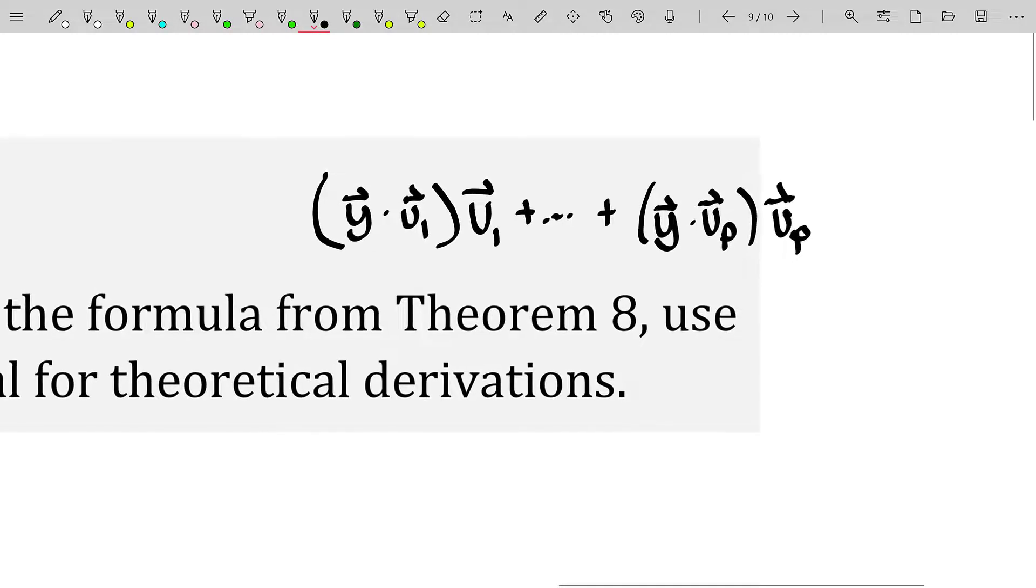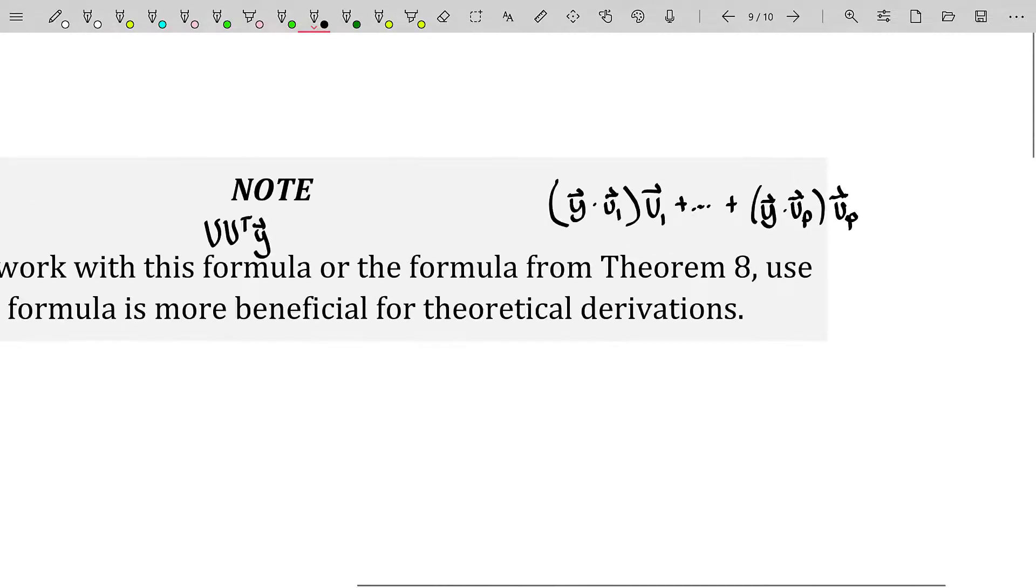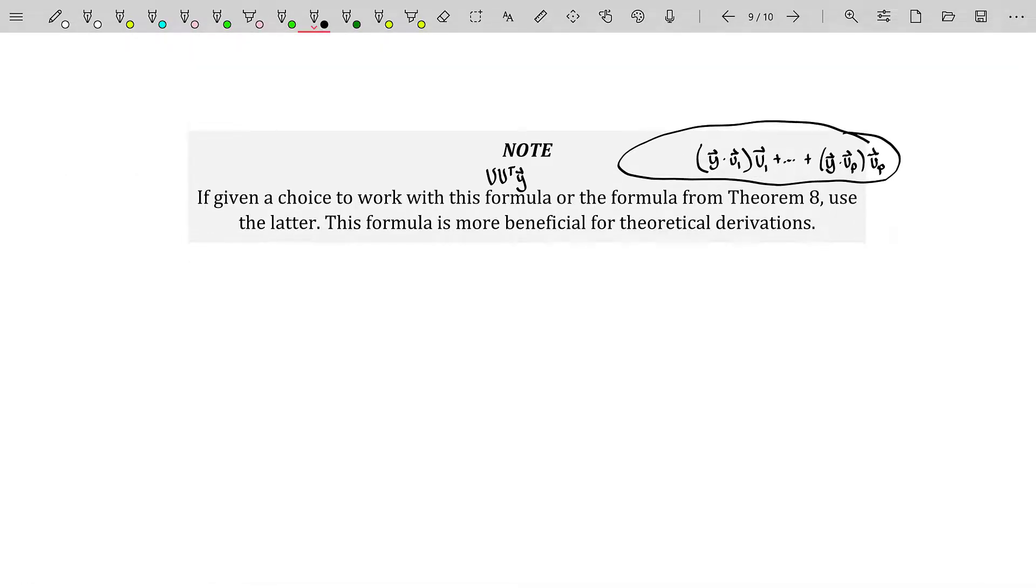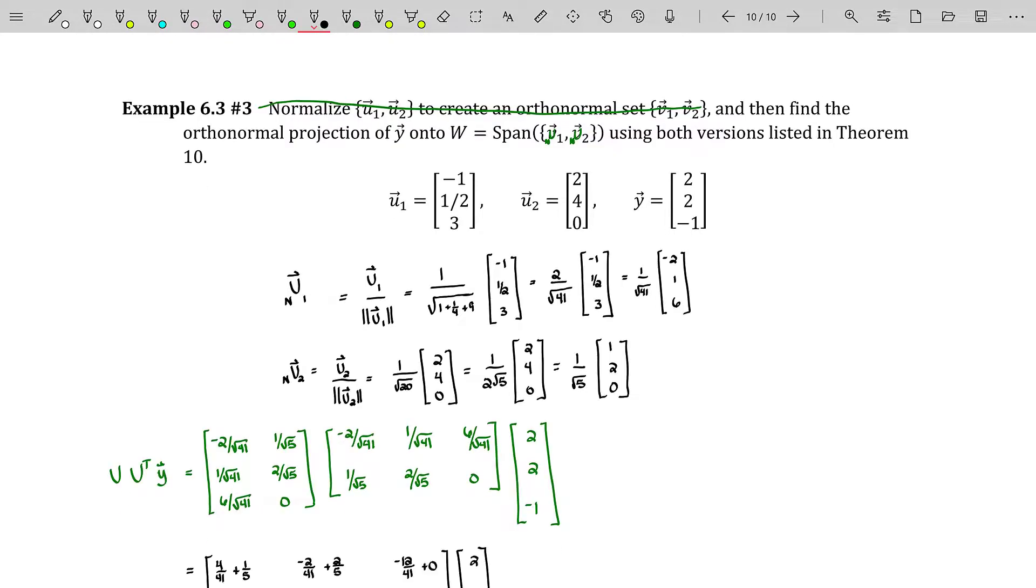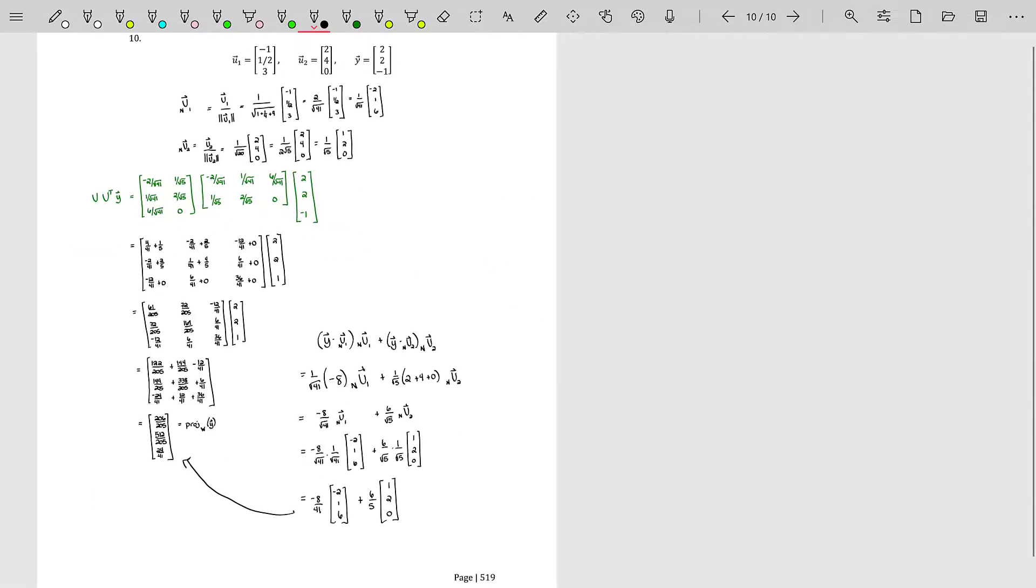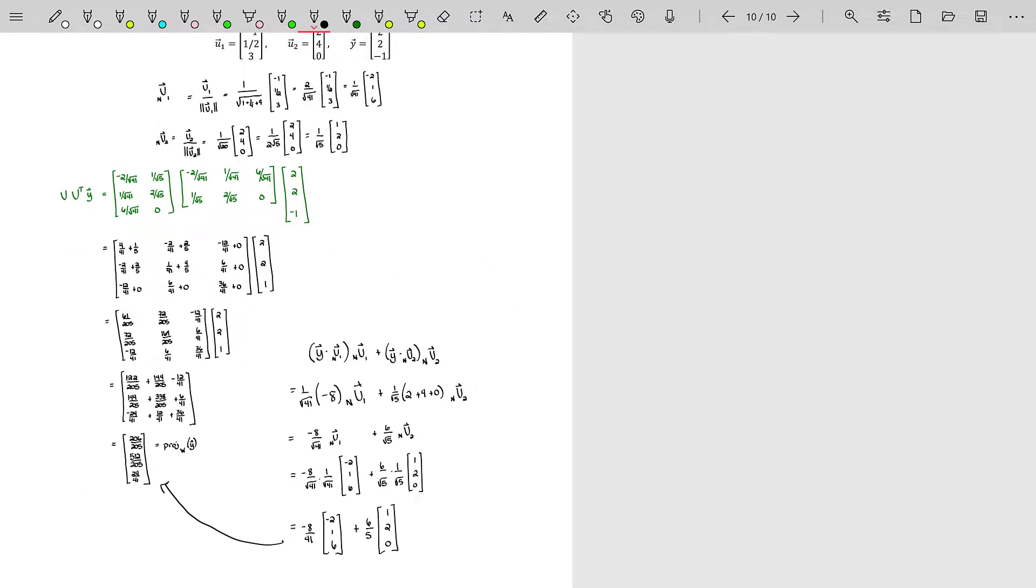If given a choice to work with the formula that we just learned, which is U times U transpose times y, or the formula from theorem eight, which is y dotted with u one times the vector u sub one plus so on and so forth down the line. Well, and by the way, this formula is only viable if you have an orthonormal basis. You should always use this guy right there. It's just a much cleaner computation. And as such, you just want to use it if you're doing any by hand work. And that's probably pretty obvious from the work we did here, right? Incredibly obvious. In fact, U times U transpose times y ended up being a massive mess. But that U times U transpose times y is useful for theoretical things. So we might need that for very specialized use cases. Anyhow, that does it for this video and actually for this entire section of material. I hope you have a great day. Be a wonderful human being.